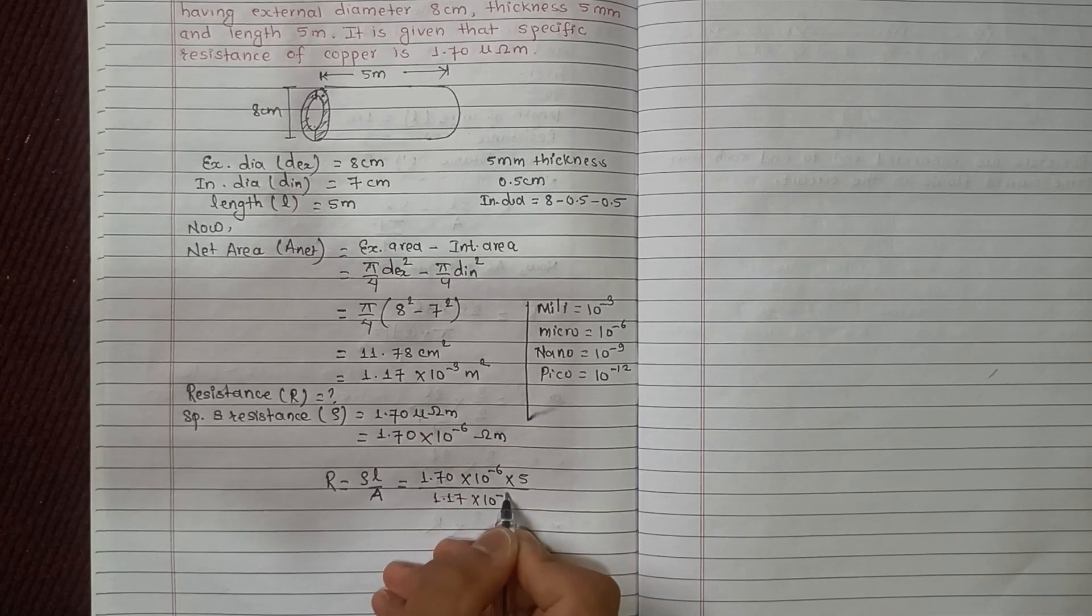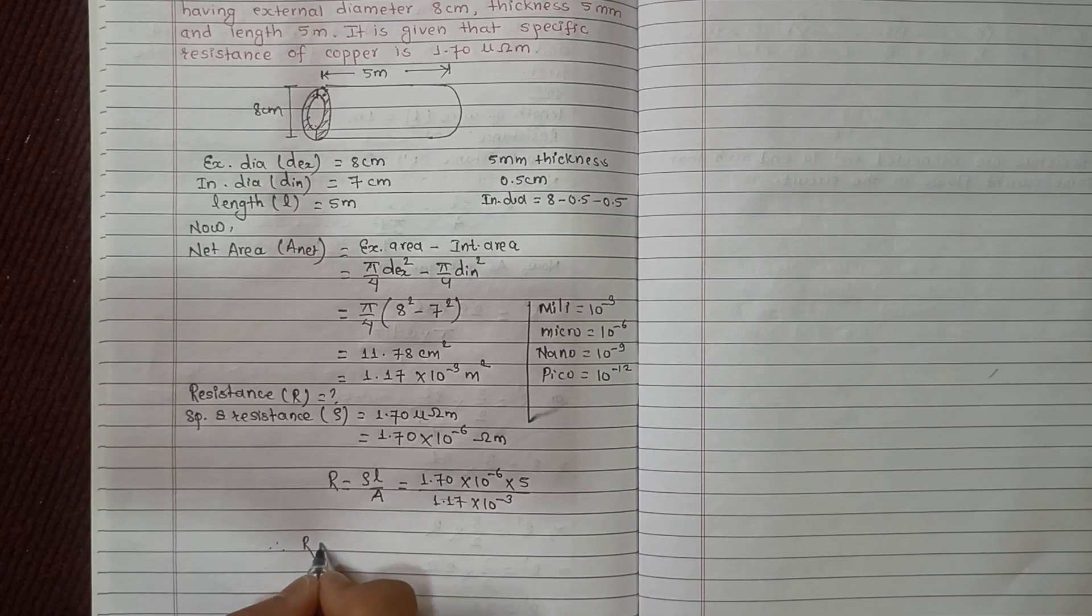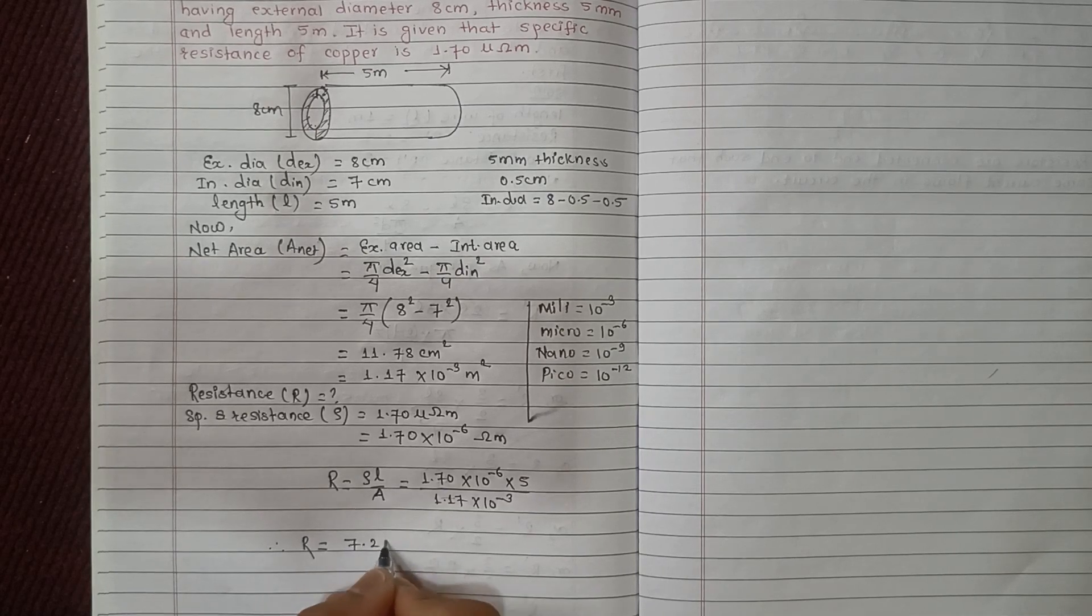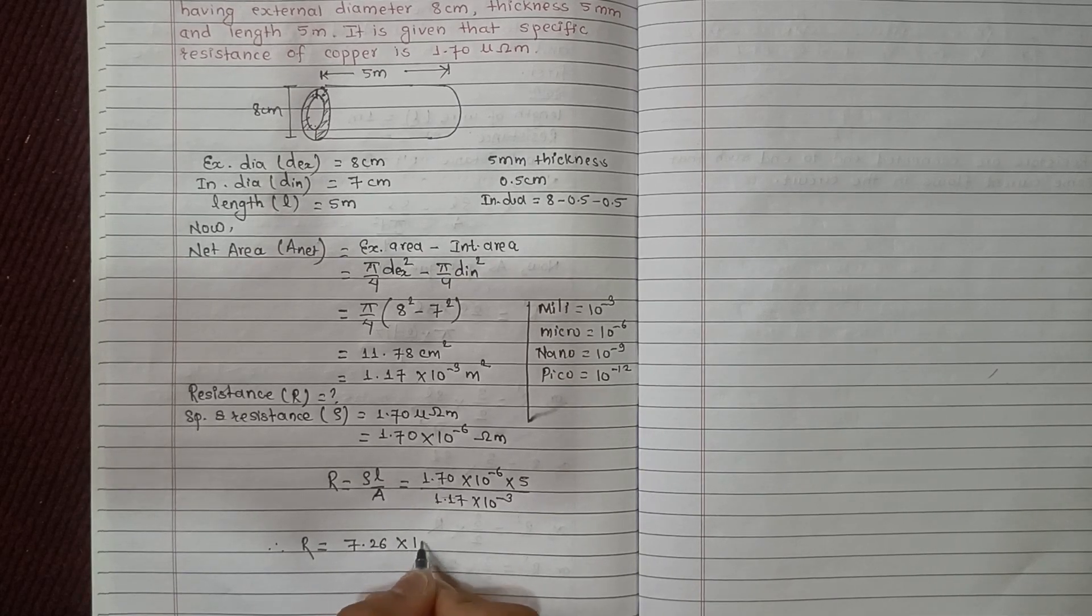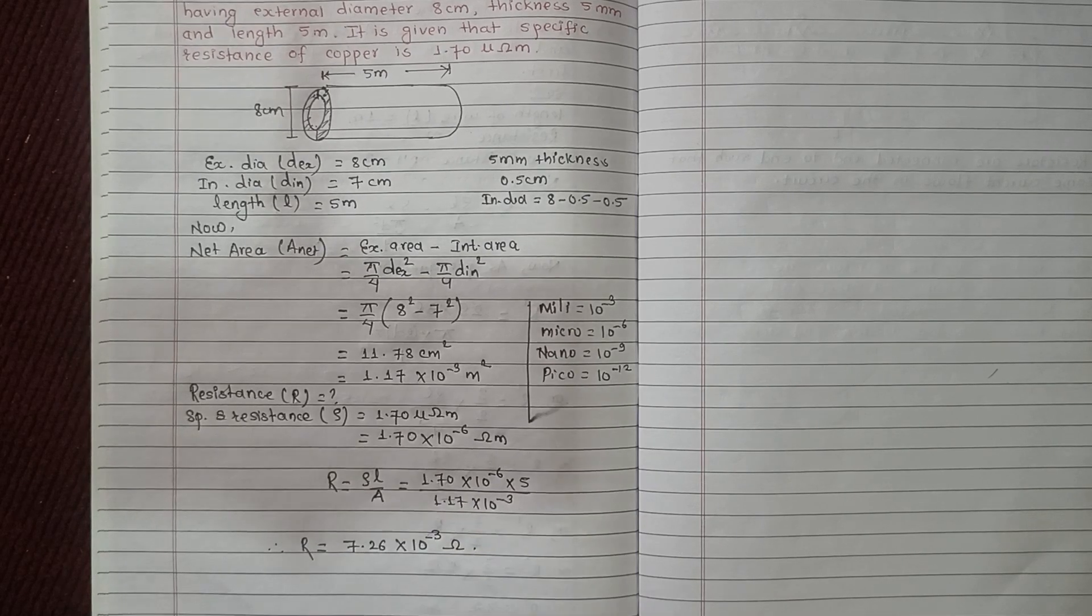The resistance of the copper tube is 7.26 times 10 to the power minus 3 ohm.